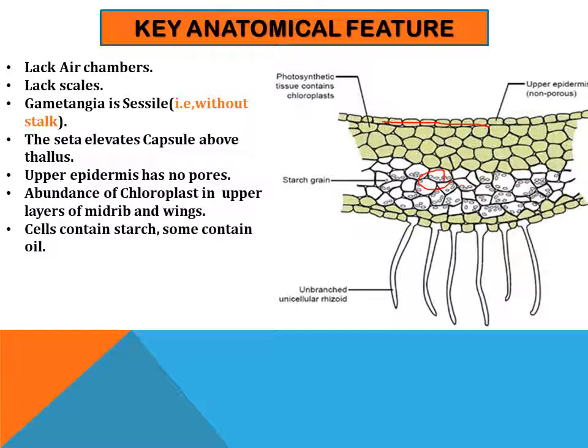Key anatomical features: lack of air chambers, lack of scales, gametangia are present, no stomata. The seta elevates the capsule above the thallus. The upper epidermis has no air pores. An abundance of chloroplasts is seen in the upper layers of the midrib and wings; cells contain starch and some contain oil.